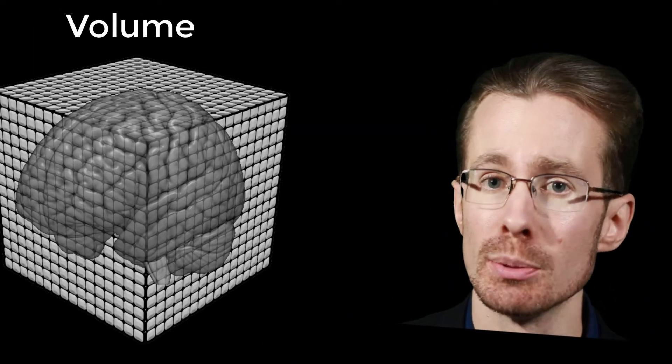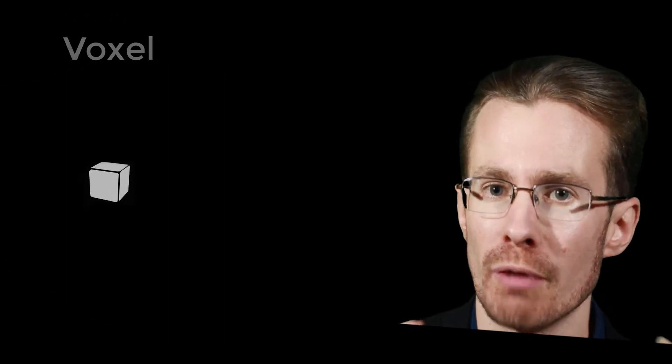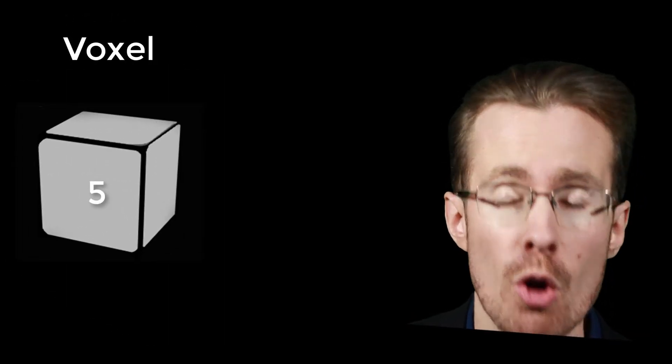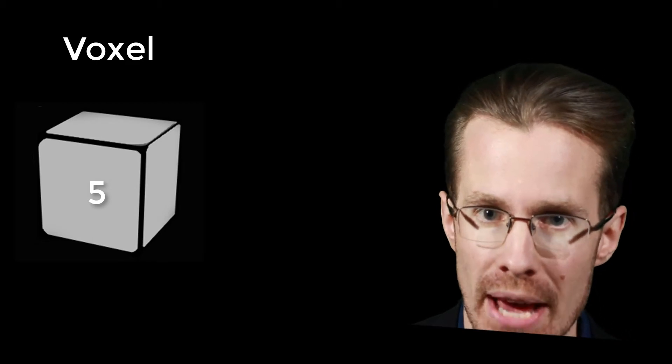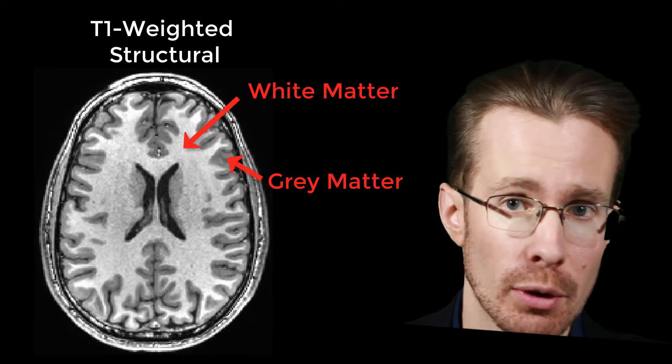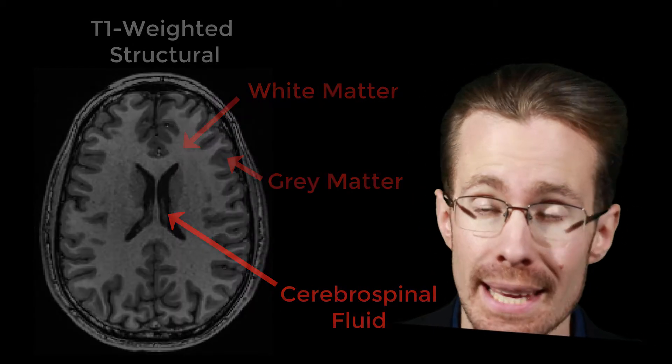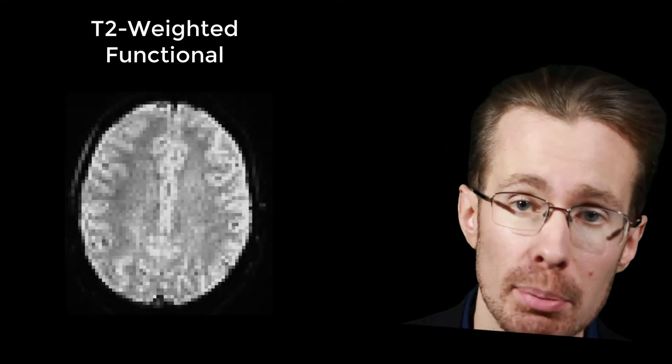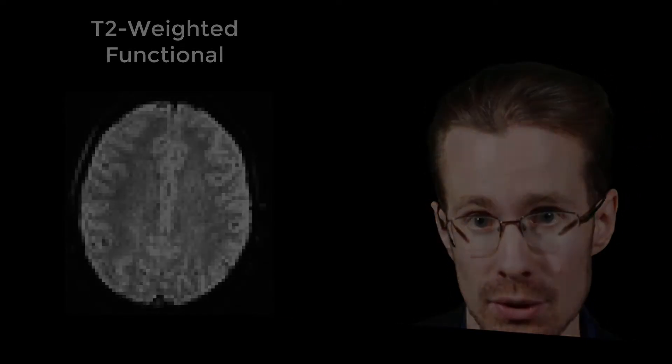Most of what I've talked about until now has been fMRI data analysis. MRI data comes to us off the scanner in the form of volumes. I once compared these to Rubik's Cubes, and all the smaller cubes inside of that cube are called voxels. Each voxel contains a single number representing the intensity of that voxel. For T1 weighted or structural images, this determines the boundary between white matter and gray matter from cerebral spinal fluid. In T2 weighted images, it represents more active voxels compared to less active voxels.